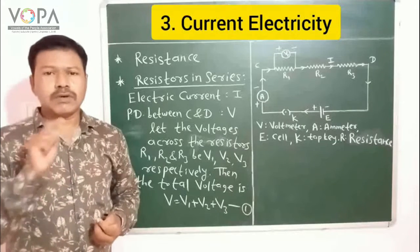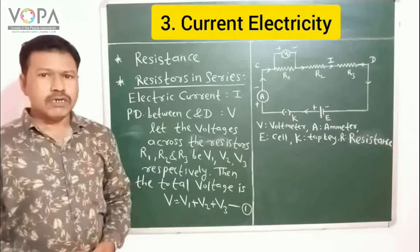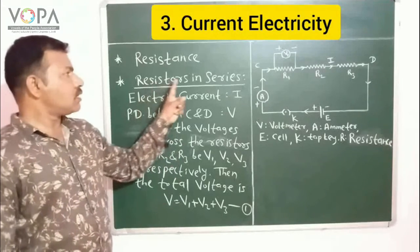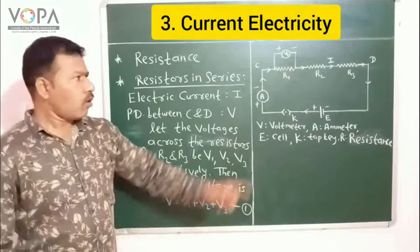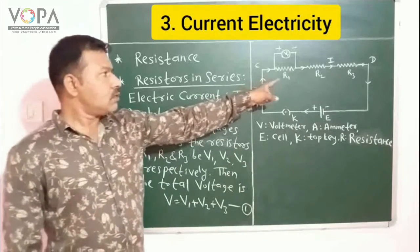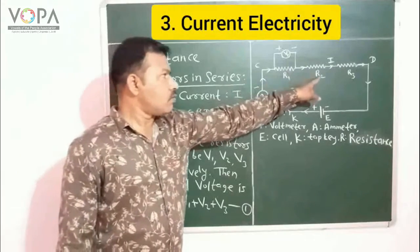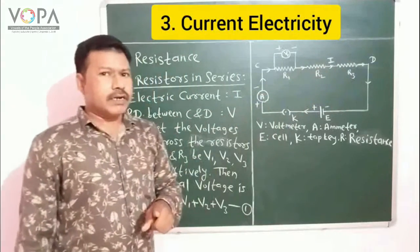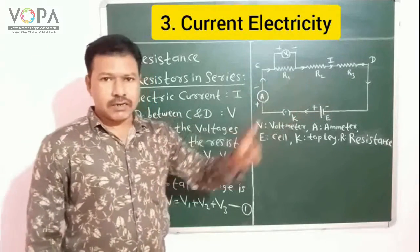So let us start with resistors connected in series. Observe the figure. The three resistors R1, R2, and R3 are connected one after the other in a single line.